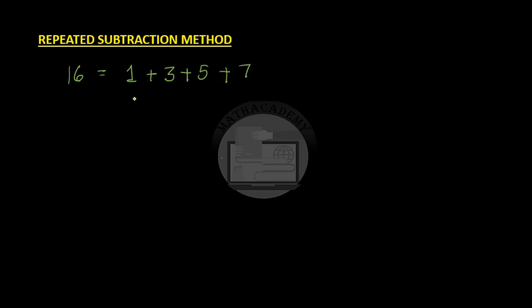How many odd numbers are we adding? We are adding 4 consecutive odd numbers, and hence 16 is the square of 4.